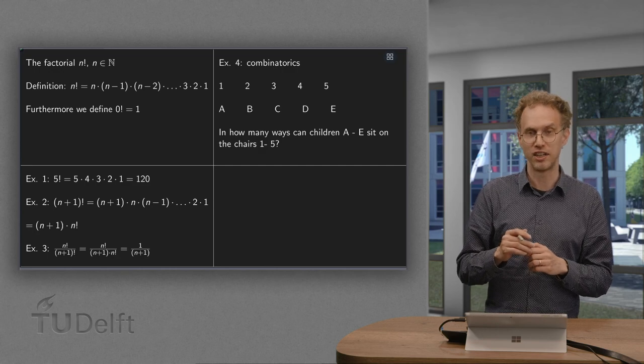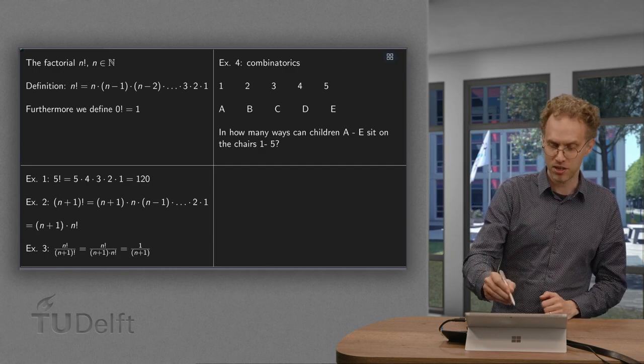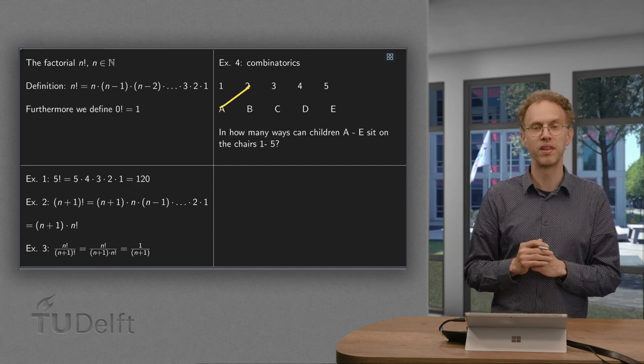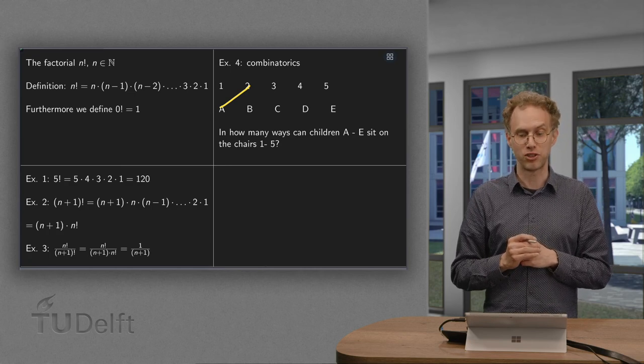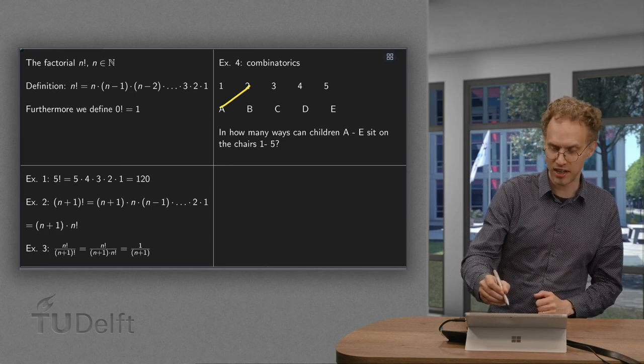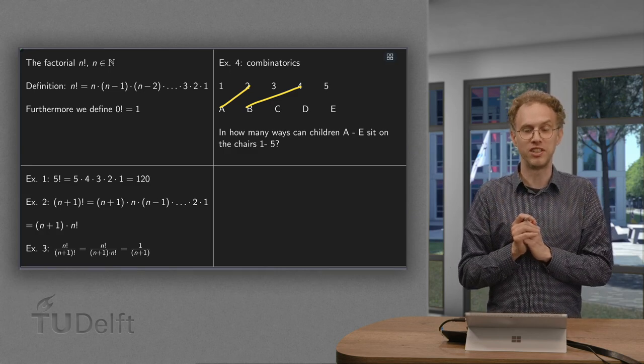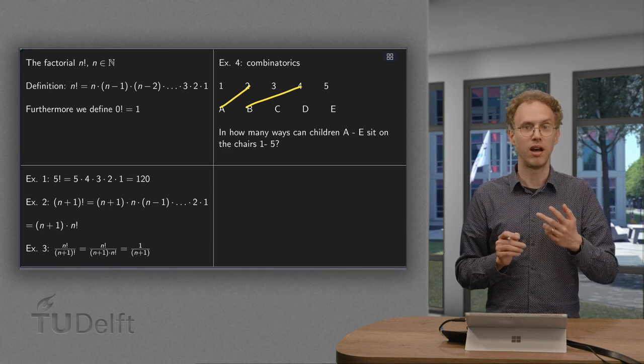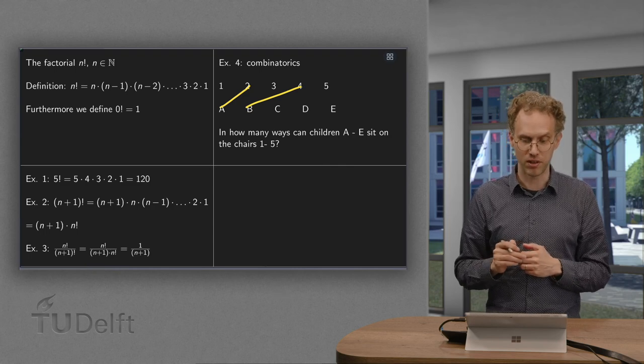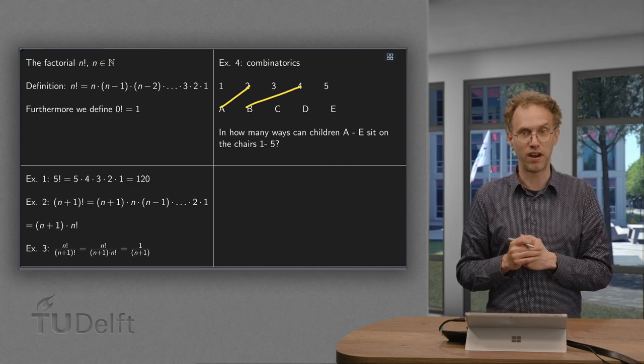And how many ways can you distribute the children over the chairs? Now let's take a look first at Anna. She has 5 choices. So suppose she takes 2. Then for Bart there are 4 choices left. Say he takes 4. So how many choices could we have formed in general? Now we have 2, 4, but we could have had 2, 1, 2, 3 and 2, 5 as well.